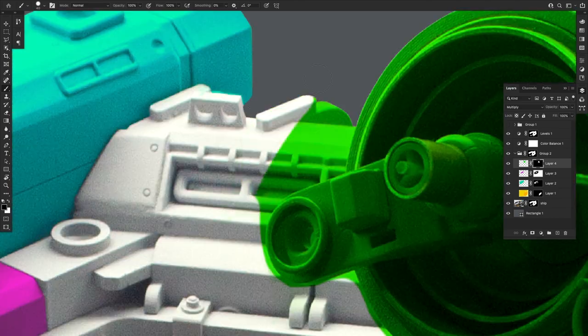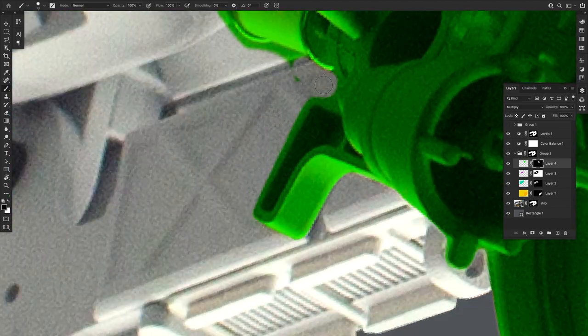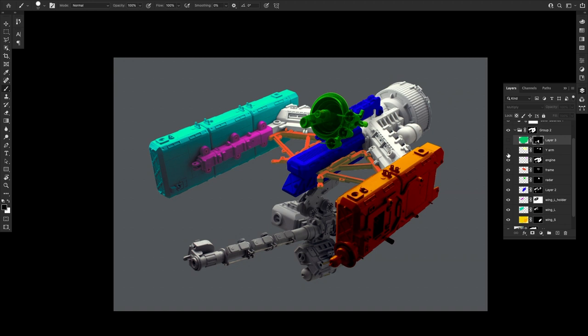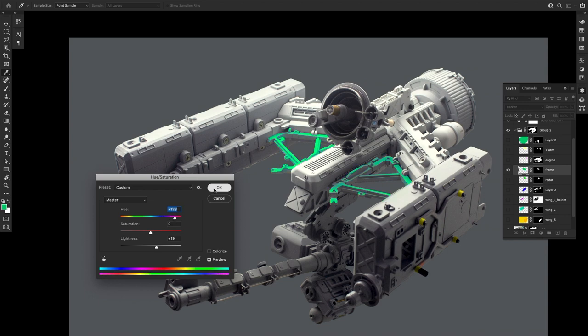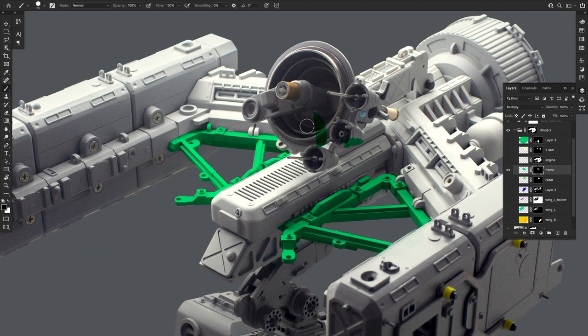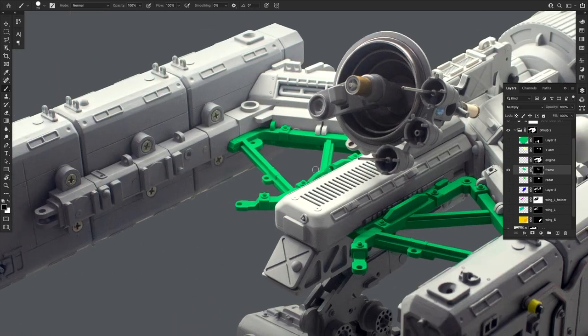Once I had every structure separated on a layer, I could start choosing the colors. And the good thing about using Photoshop for this part of the process is that sometimes some happy accidents can happen.